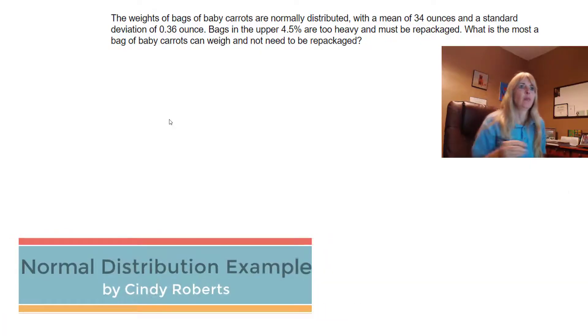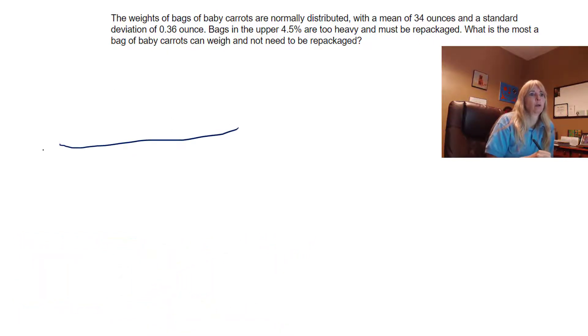Alright, the weight of bags of baby carrots are normally distributed. What does that mean? Draw a normal curve, bell-shaped curve, with a mean of 34 ounces, so that's the mean, and a standard deviation of 0.36 ounce.